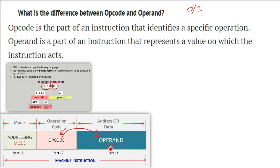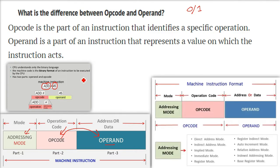So op code is the part of the instruction that identifies a specific job, specific operation, specific work. And the operand is a part of that instruction that will represent a value on which the instruction is going to act.